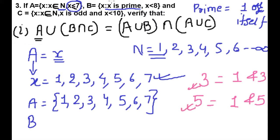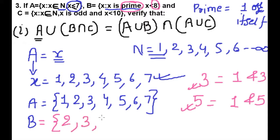Here x is a prime number and less than 8. Starting from 1 — 1 is not a prime number. 2 is prime. 3 is prime. 5 is prime. 6? No. 7 is a prime number. That's it, because the condition is less than 8, so we stop at 7. Therefore B = {2, 3, 5, 7}.